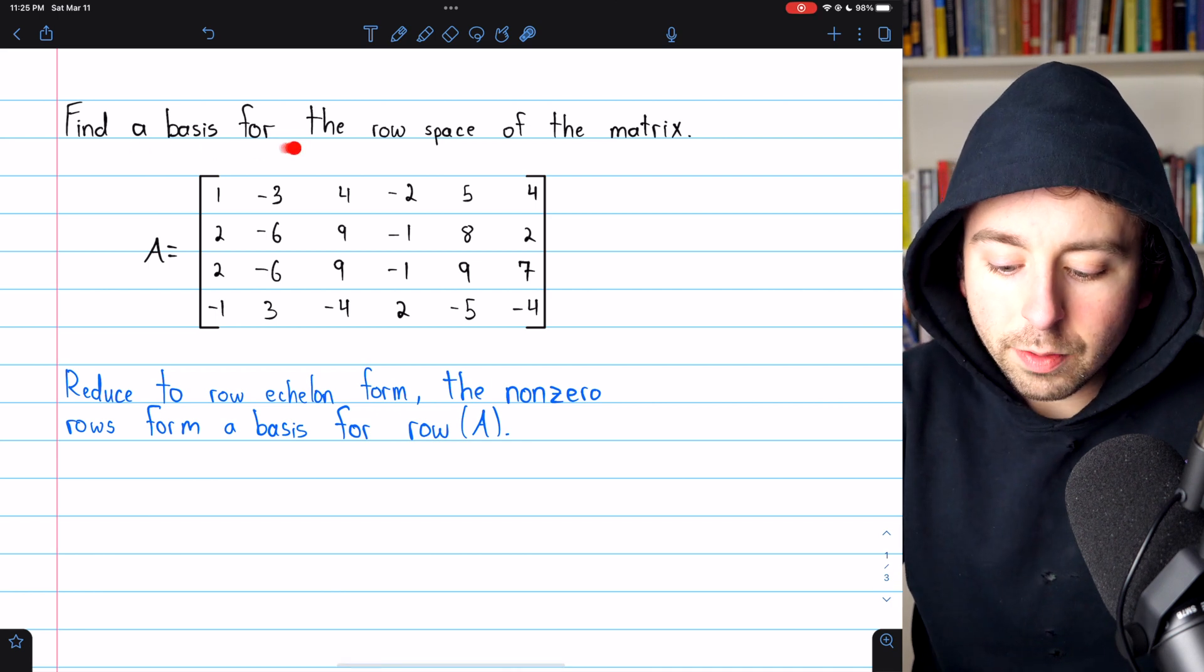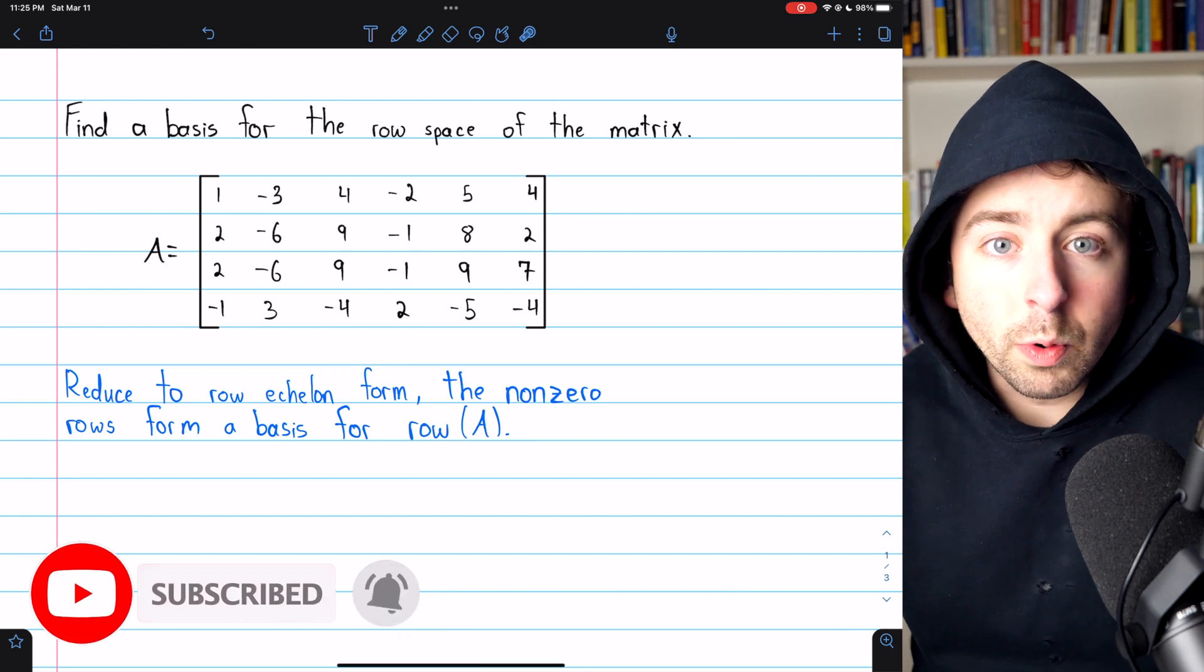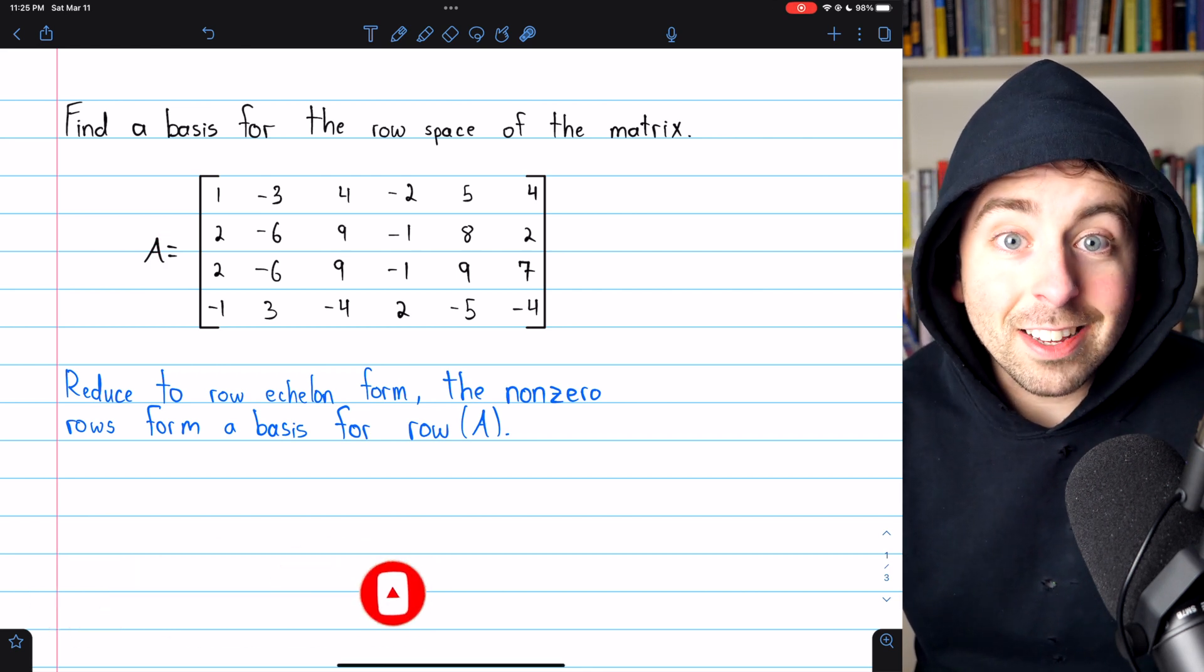We're going to find a basis for the row space of this matrix. That means we're looking for a set of linearly independent vectors that span the row space. That's a basis.